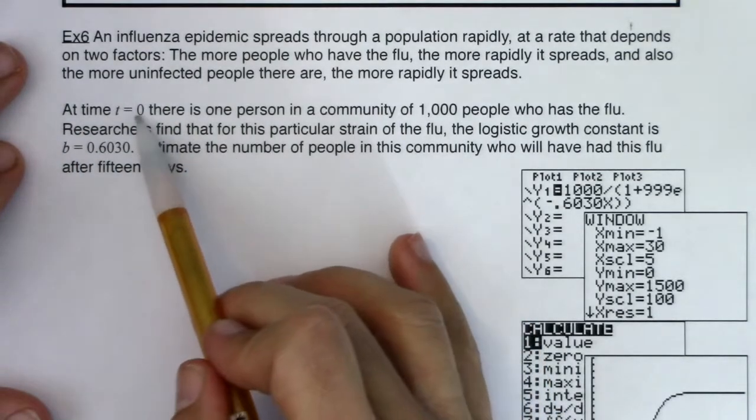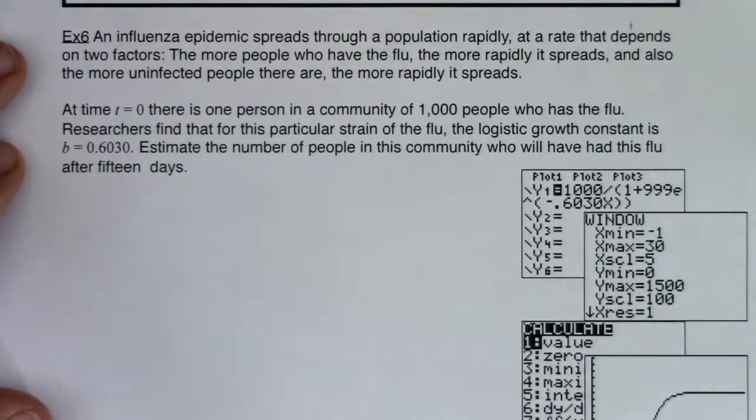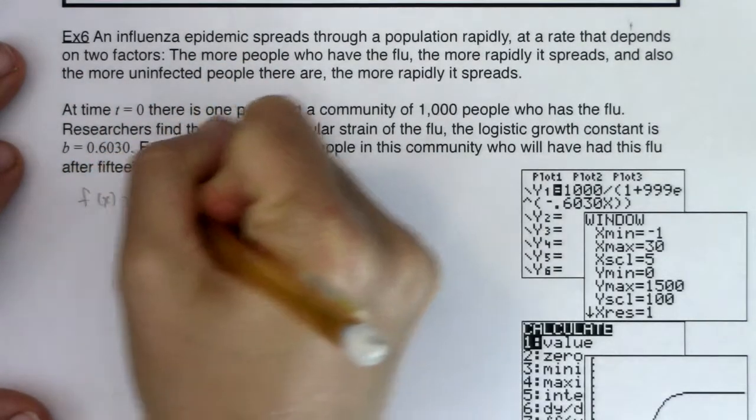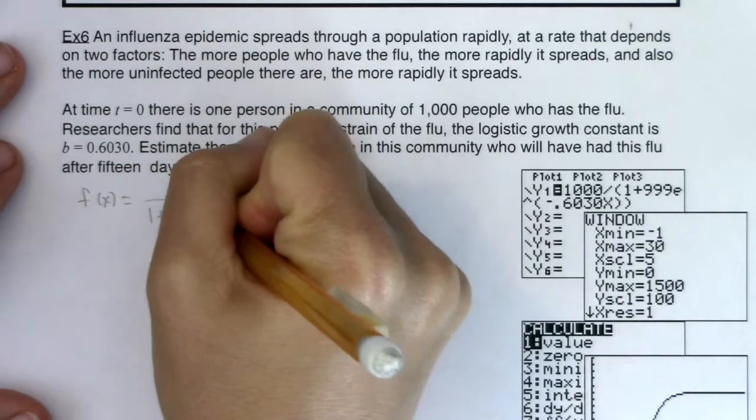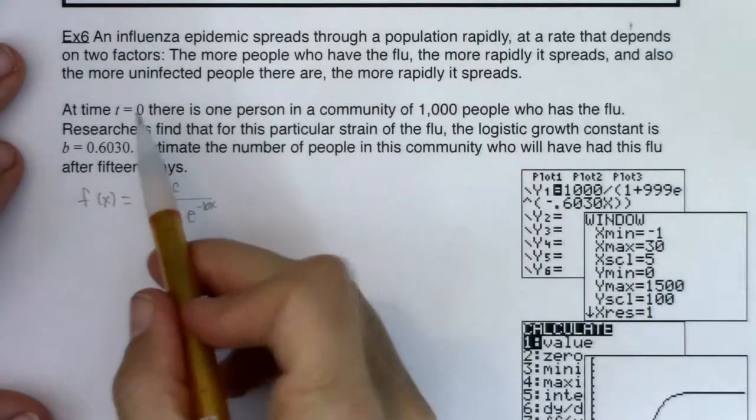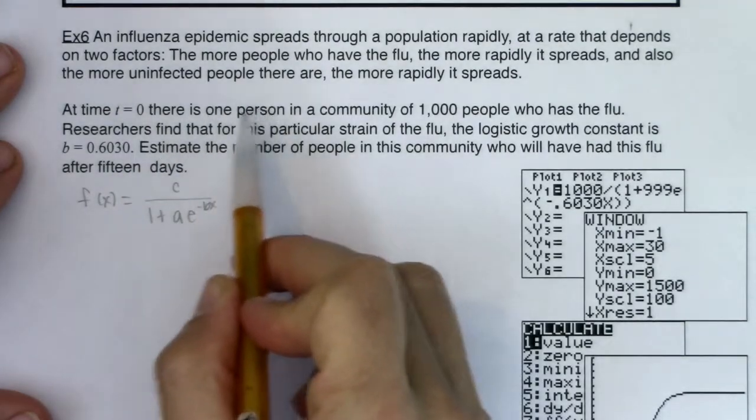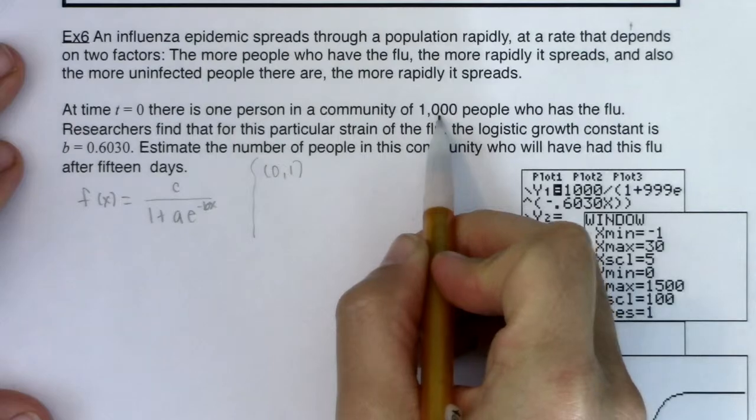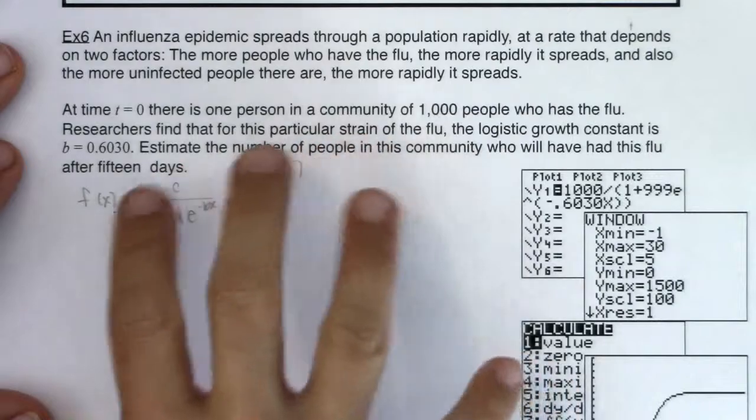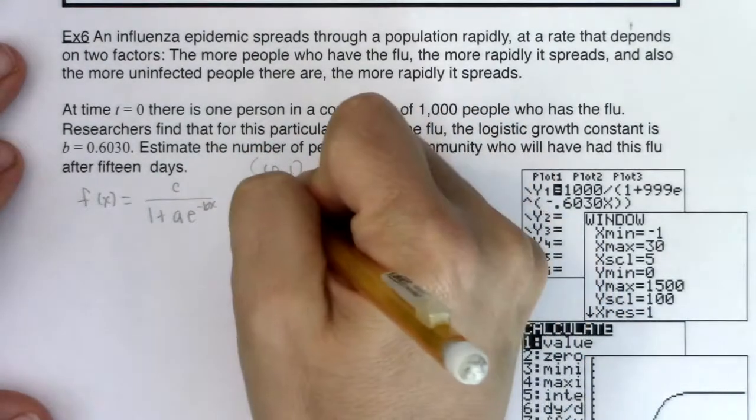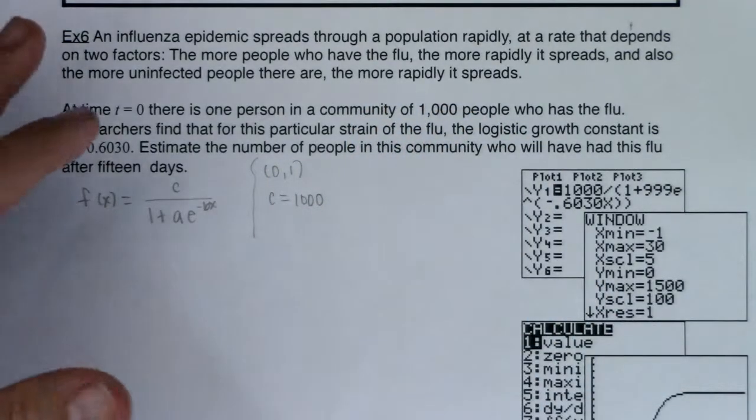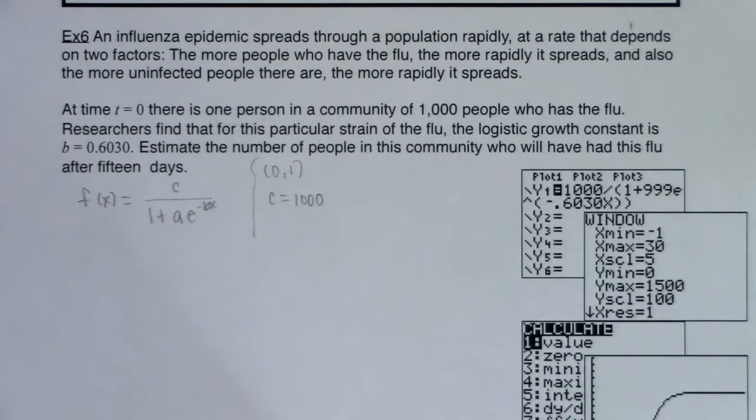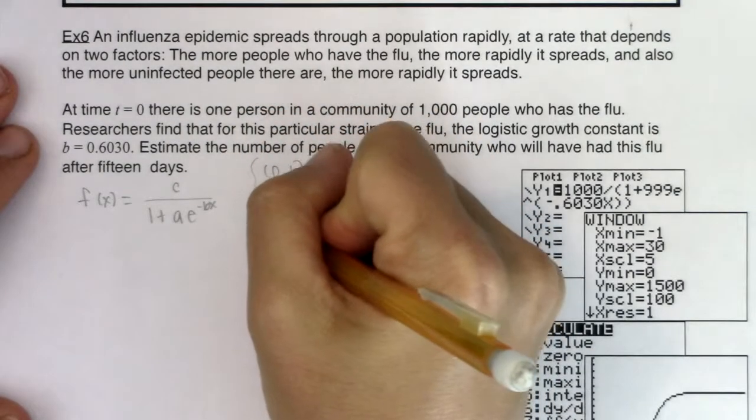So we're saying at time t equaling zero, one person's got it. There's a thousand people in this community and there's our growth rate, our rate of growth. So let's take a look at this logistic model. So I'm going to do f of x, it's going to be equal to c over one plus a, e to the negative bx. So let's pick these apart. I hear this is an ordered pair. At time t equaling zero, one person had the flu. So let me go ahead and write that. I've got an ordered pair. I want to make a list of what I know. I hear that there's a thousand people in the community, meaning that as this flu is spreading, the most folks that can get infected are one thousand. My capacity for this flu virus, if we're going to assume that there's no way that these thousand people are going and potentially infecting other folks, the carrying capacity of this flu epidemic is a thousand folks. And then I'm also given that b is equal to 0.6030.